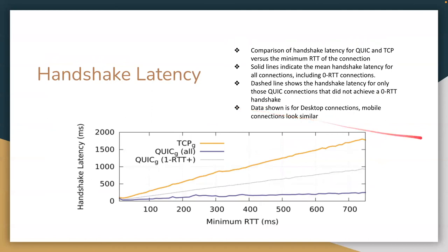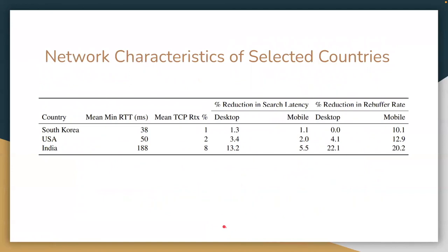Since we've talked a lot about the handshake, I wanted to quantify that. The solid line represents all RTT connections — those that do not include zero RTT connections — and this is the baseline TCP. We can see that whether or not we include zero RTT connections, the handshake latency is significantly less for QUIC in either case. Finally, looking at network characteristics for selected countries — South Korea, USA, and India — percent reduction in search latency and percent reduction in rebuffer rate were improved across the board, for both desktop and mobile.